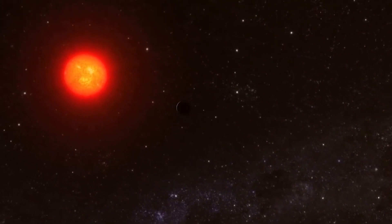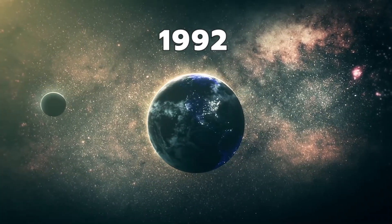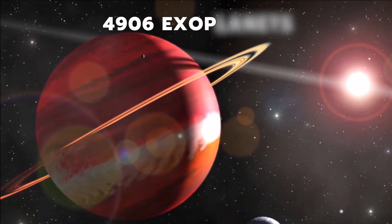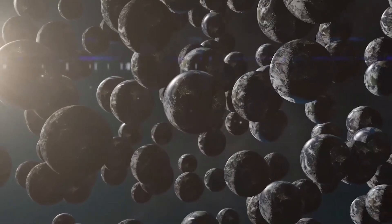The first exoplanet was detected in 1992, and more have since been detected. As of today, 4,906 exoplanets have been detected, with more still being detected.